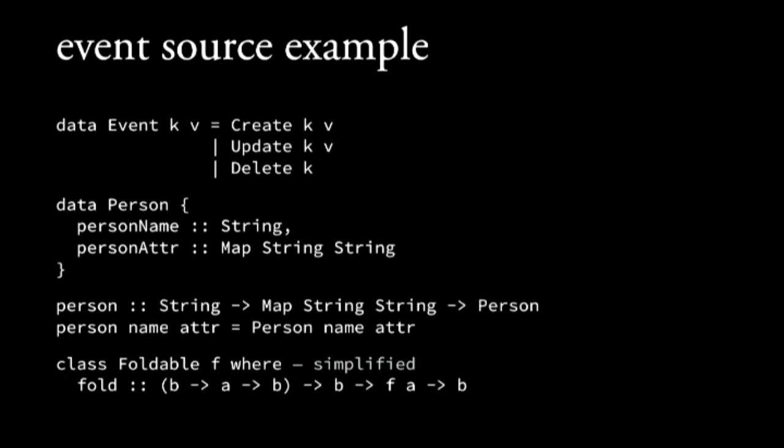We also need this simplified version of Foldable, where given a function from B and A to B, a seed value of type B, and a Foldable of A's — say a list of A's — we want to then produce a final value of B.